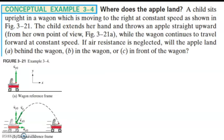Conceptual example: A child sits upright in a wagon moving to the right at constant speed. The child extends her hand and throws an apple straight upward while the wagon continues to travel forward at constant speed. If air resistance is neglected, will the apple land A) behind the wagon, B) in the wagon, or C) in front of the wagon?